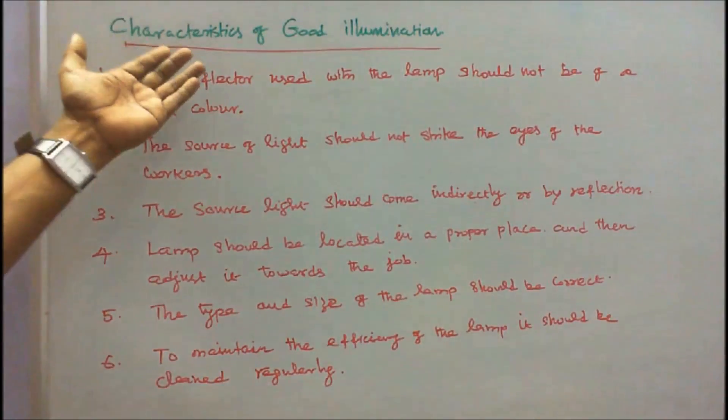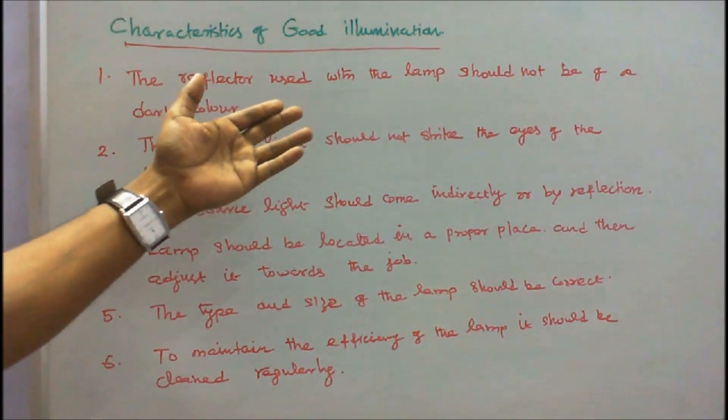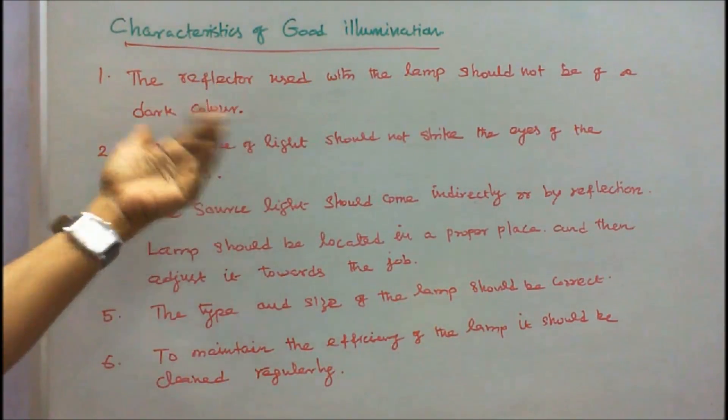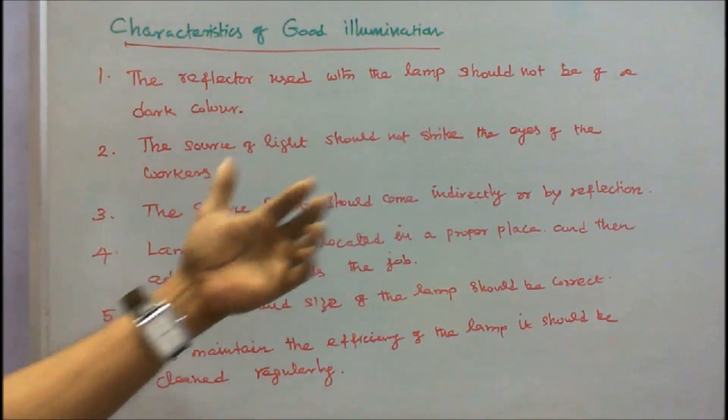Characteristics of good illumination. Number one, the reflector used with the lamp should not be of dark color. Number two, the source of light should not strike the eyes of the workers.